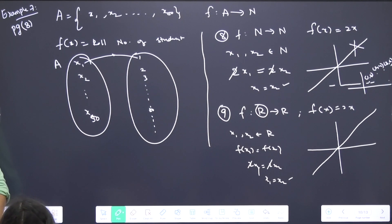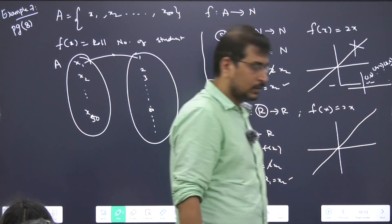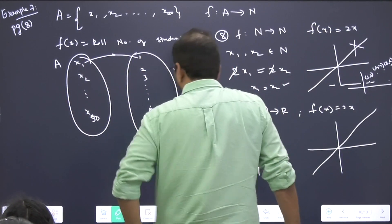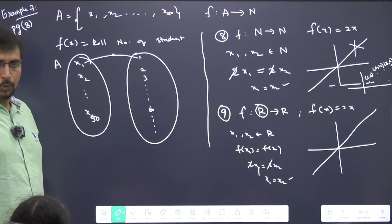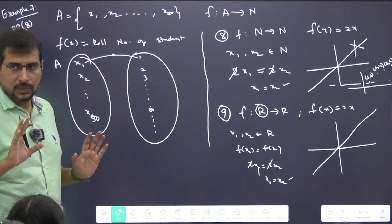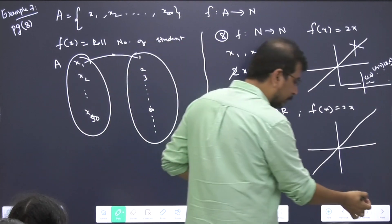Shall we see what is an onto function? Because we saw three questions where they asked us about onto. Let's try to understand what that means. Before that, I want a confirmation: is everyone having clarity about codomain and range? No confusion? Okay, shall I proceed?